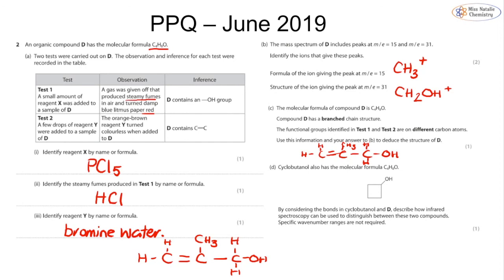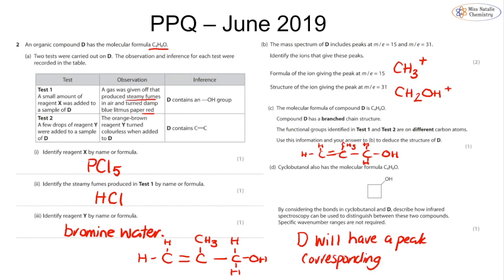Part D compares compound D with cyclobutanol, which also has molecular formula C₄H₈O. Using infrared spectroscopy to distinguish between them without giving specific wave numbers: the key difference is that compound D contains a C=C double bond whereas cyclobutanol does not. So compound D will have a peak corresponding to a C=C bond that cyclobutanol will not, making sure to compare and contrast between the two.